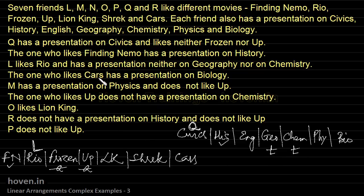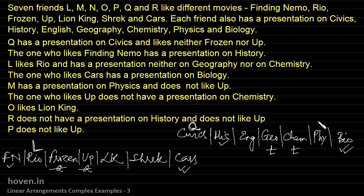The one who likes Cars has a presentation on Biology — Cars and Bio are paired together, marked with two tick marks. M has a presentation on Physics — confirmed, so we write M under Physics. M doesn't like Up, so we put an M-cross under Up.